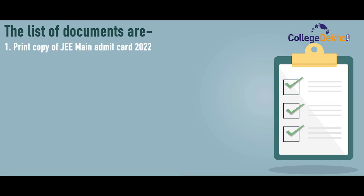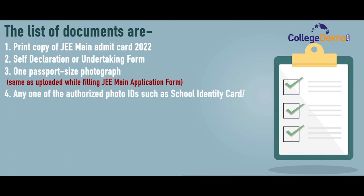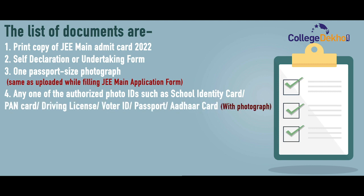The list of documents includes: a print copy of the JEE Main admit card 2022, a self-declaration or undertaking form, one passport size photograph same as uploaded while filling the JEE Main application form, and any one of the authorized photo IDs such as school identity card, PAN card, driving license, voter ID, or passport.